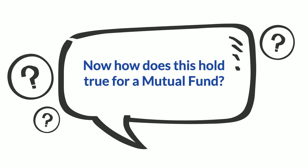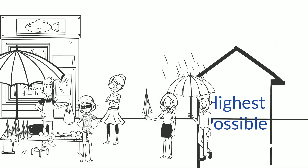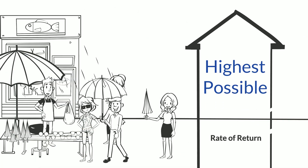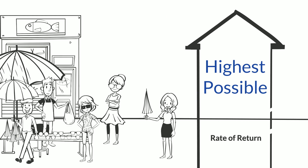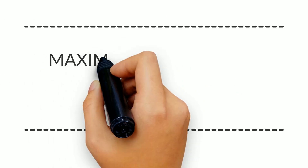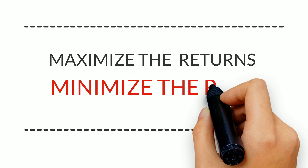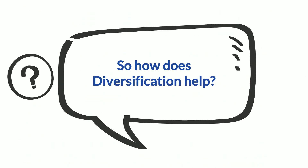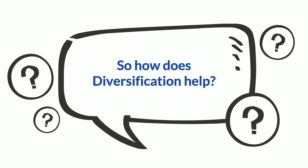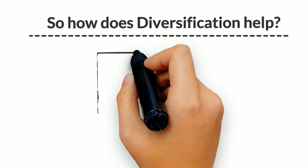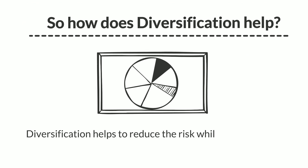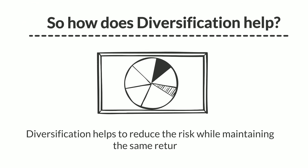Now, how does this hold true for a mutual fund? The objective of any mutual fund is to obtain the highest possible rate of return without placing your funds at risk. Simply put, maximize the return and minimize the risk. So, how does diversification help? Diversification helps to reduce the risk while maintaining the same returns.